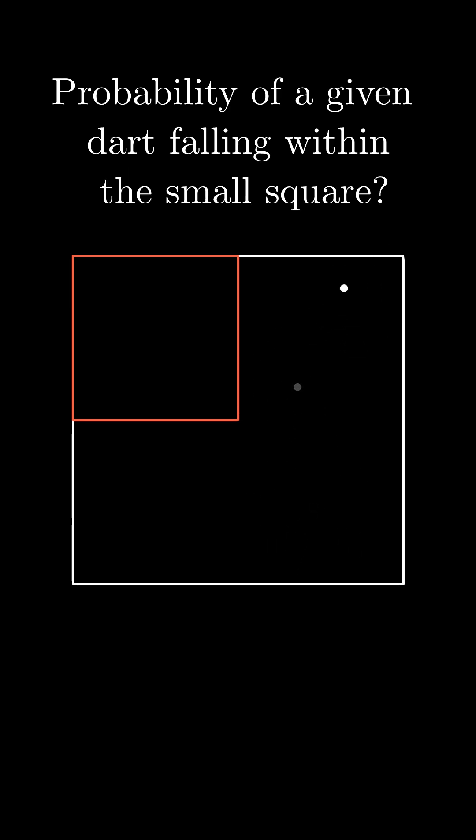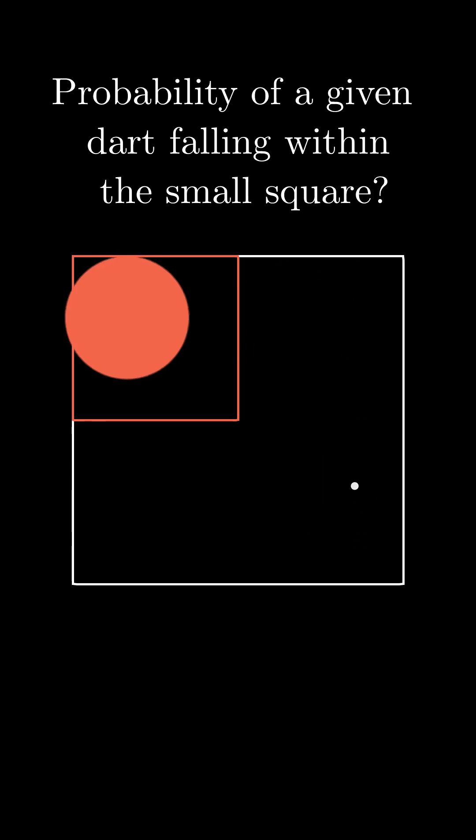Now imagine that you throw random darts into this setup. And here is the question: What is the probability that any given dart falls within the small square?